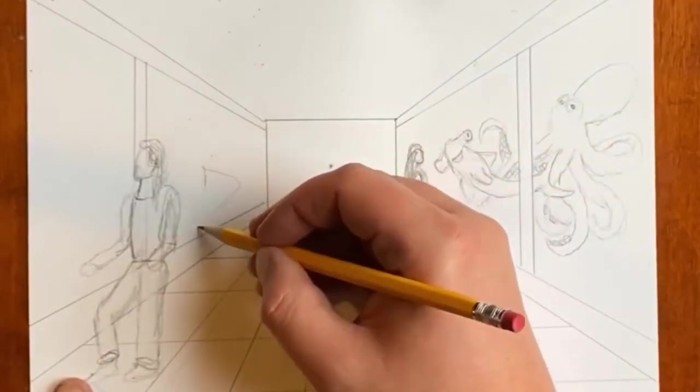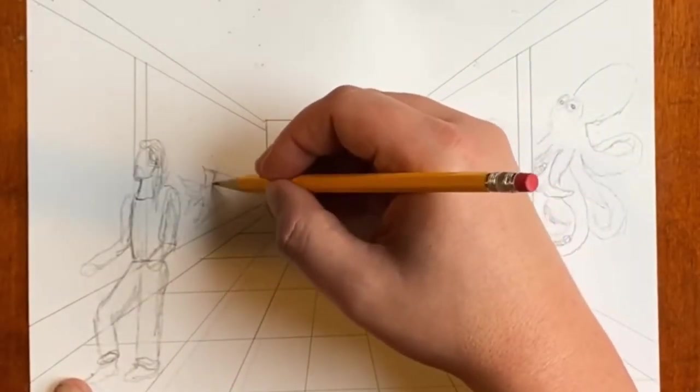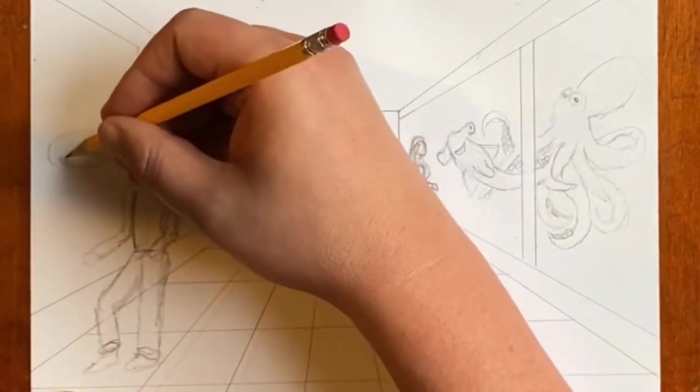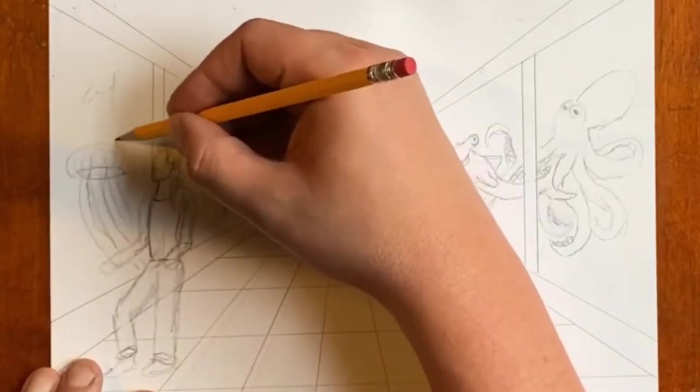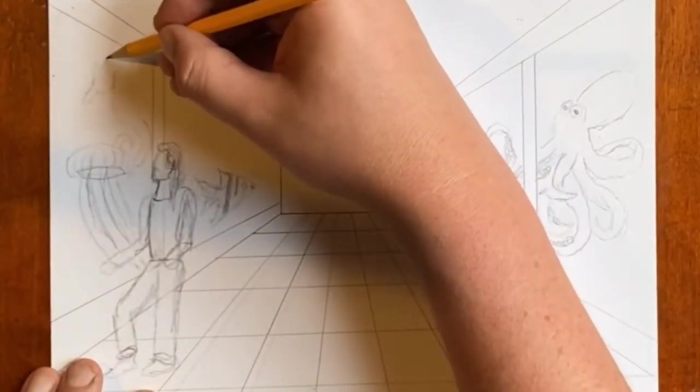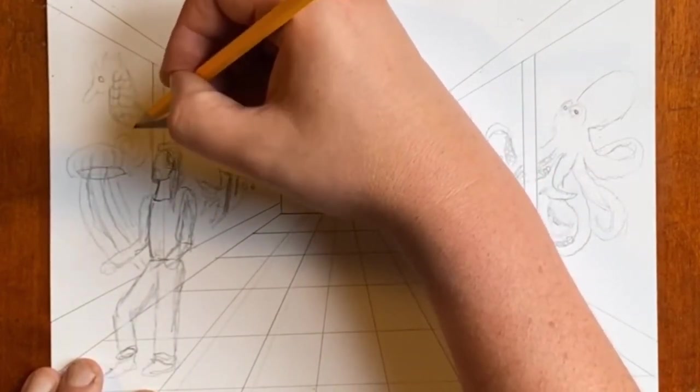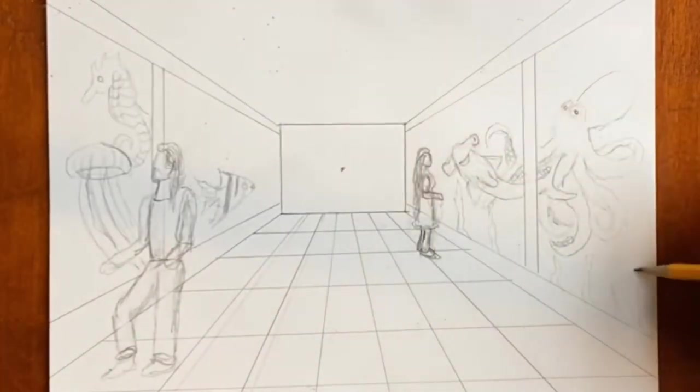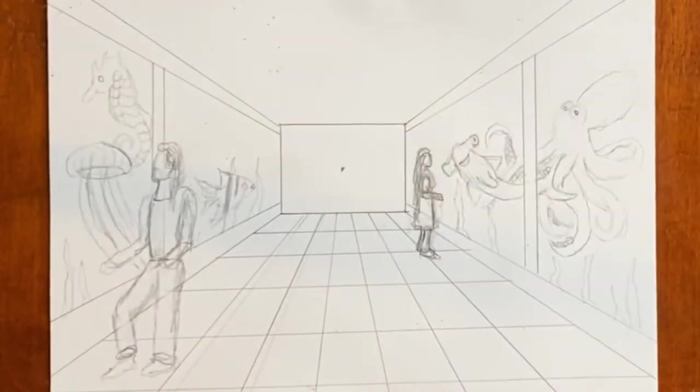We do want to fill up the space. Do whatever kind of ocean animals you want. You can even do a mermaid or a scuba diver or a sea monster if you want. It's kind of open. Here I've got a jellyfish, a seahorse, and some other kinds of fish. You really want to fill up the space, and that will balance out your picture a lot.